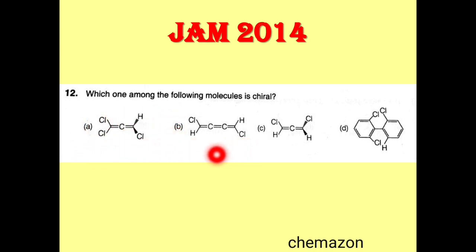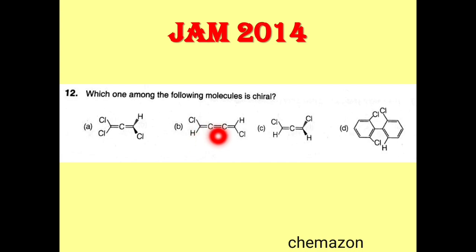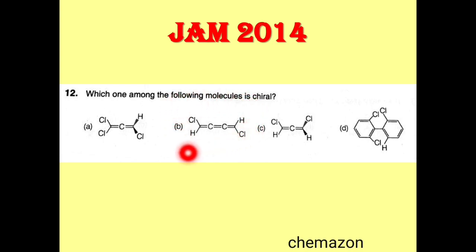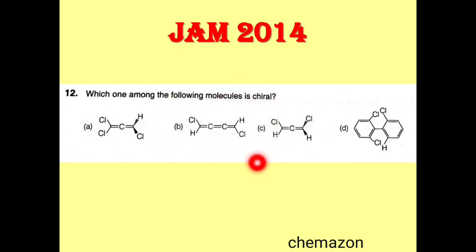In the second molecule, the terminal groups are different on a particular side, but there are three — an odd number of — double bonds. We already studied that in cumulenes with an odd number of double bonds, a molecular plane passes through the molecule cutting all atoms into equal halves.